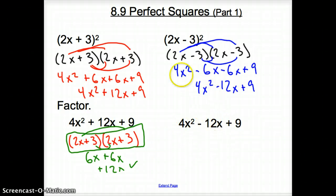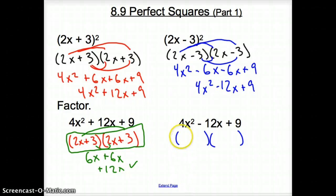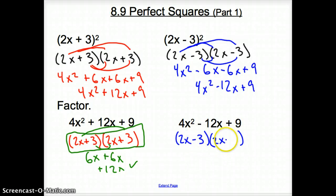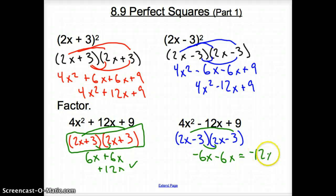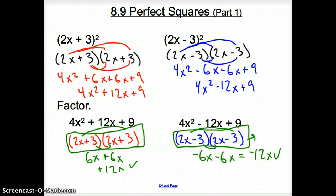Taking a look at 4x squared minus 12x plus 9 — this is the same situation. We split 4x squared apart to get 2x and 2x. Now we have to pay attention to the sign: it's going to be negative 3 and negative 3. We multiply the two outer terms to get negative 6x and the inner terms to check our work — negative 6x. That adds up to negative 12x, so we did find the correct solution. Our factors are the quantity (2x − 3) times the quantity (2x − 3), or (2x − 3) squared. We have to make sure we check our work every time.